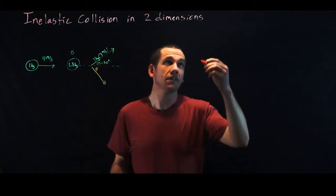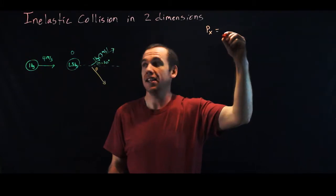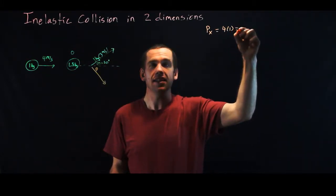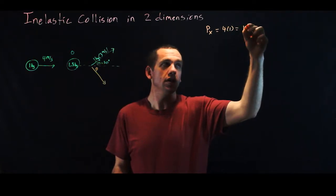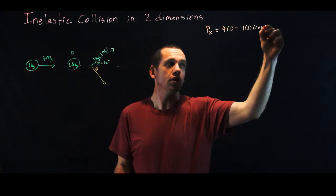So if we just write the law of conservation of momentum in x and in y, the momentum in x is given by 4 times 1 and that has to equal 1 times 3 times the cosine of 30 degrees.